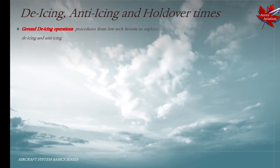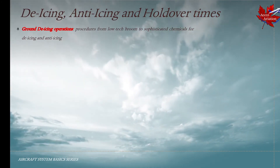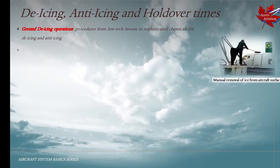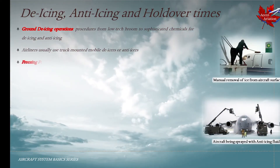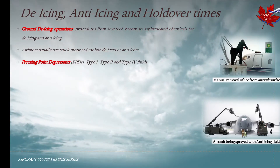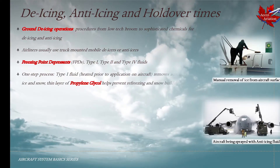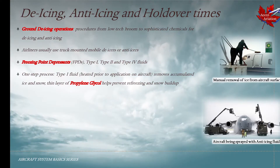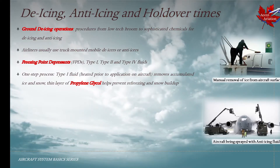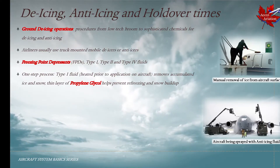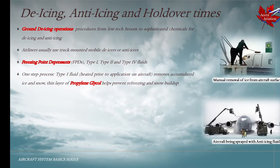We shall now discuss ground de-icing operations. The procedures range from low-tech brooms to scrape off ice on aircraft surfaces to sophisticated chemicals used for anti-icing and de-icing. Airliners typically use truck-mounted mobile de-icers or anti-icers. The fluid sprayed on the aircraft uses freezing point depressants, usually Type 1, Type 2, or Type 4 fluids. For a one-step process, Type 1 fluid is applied over the aircraft which removes accumulated ice and snow. A thin layer of propylene glycol helps prevent refreezing and snow buildup, though this kind of de-icing has the least duration of effectivity.